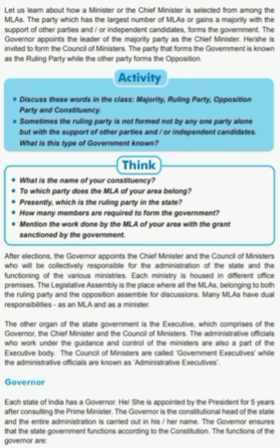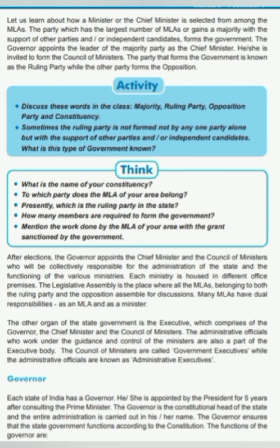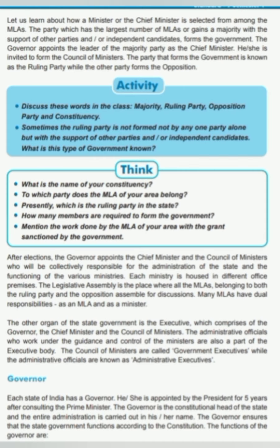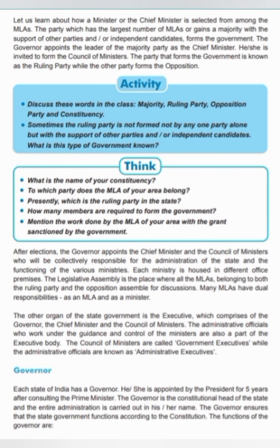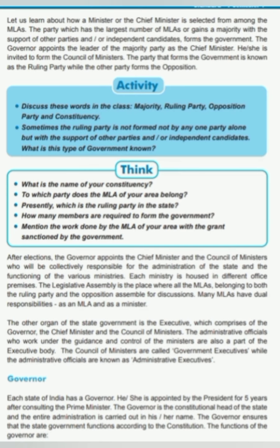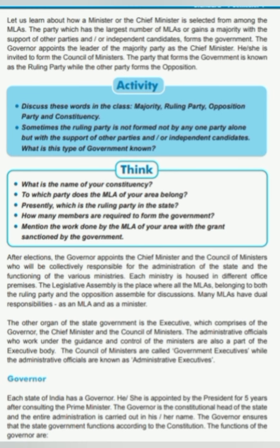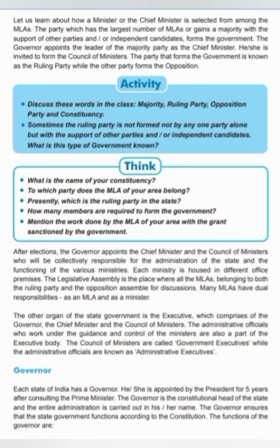The Finance Minister presents the budget in the Legislative Assembly. The cabinet brings about uniformity in administration and maintains cooperation and coordination among different departments of the government. They execute the laws made by the Legislative Assembly and assign different jobs to administrative officers and other employees. The Executive body of the state government comprises the Governor, the Chief Minister, and the Council of Ministers. Administrative officials who work under the guidance and control of the ministers are also part of the Executive Body.